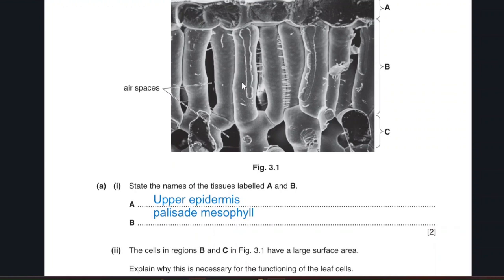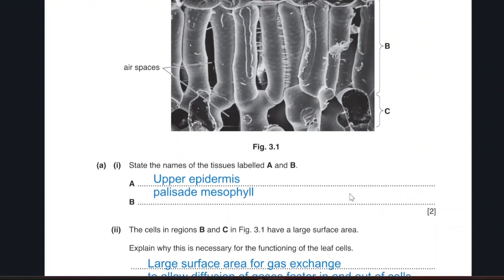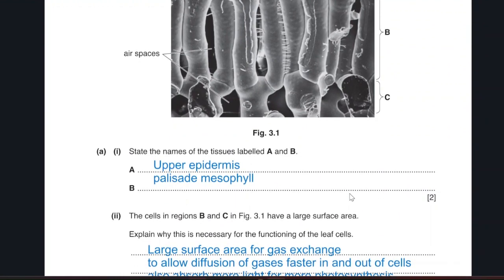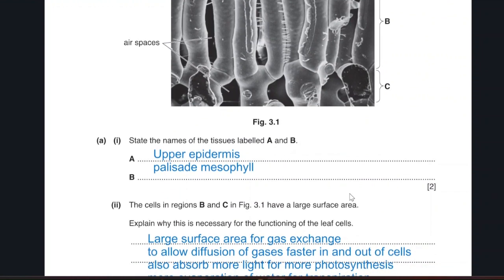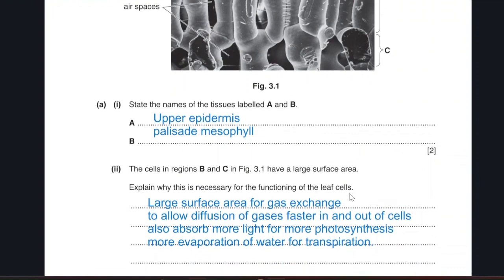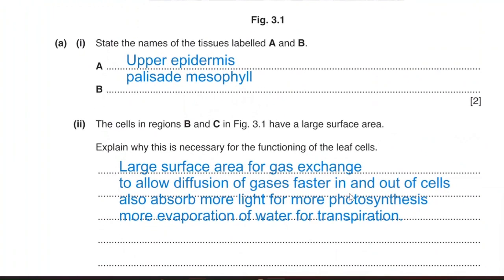Large surface area will help me in a lot of stuff. It is important for gas exchange to allow diffusion of gases faster in and out of the cell. Also, absorb more light for photosynthesis. Also, more evaporation of water for transpiration.